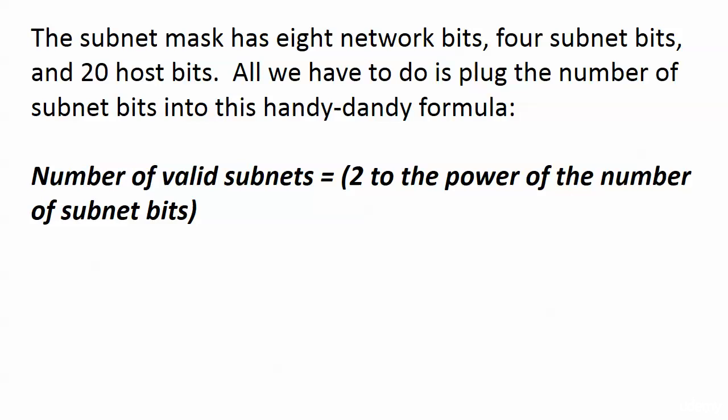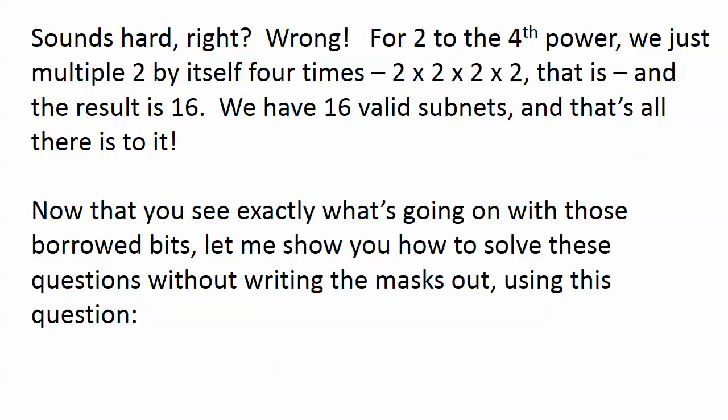Now again, if you're not used to hearing fourth power or fifth power, it's like oh that sounds complicated. It's not. For 2 to the fourth power, all you're doing is multiplying 2 by itself 4 times. It's 2 times 2 times 2 times 2. The result is 16 because 2 times 2 is 4, 4 times 2 is 8, 8 times 2 is 16.